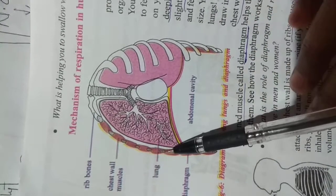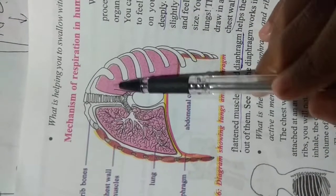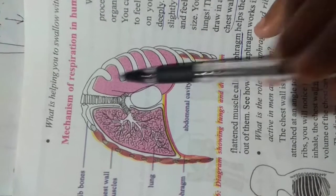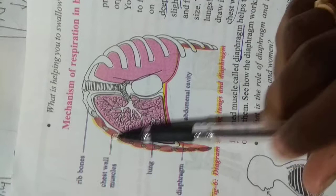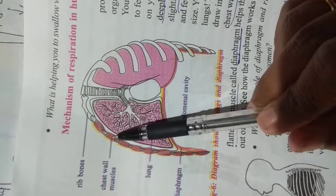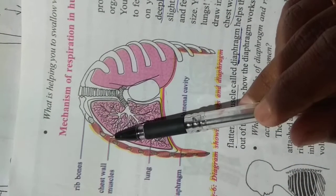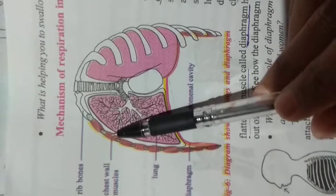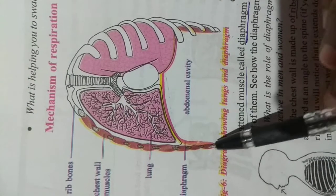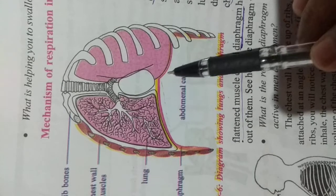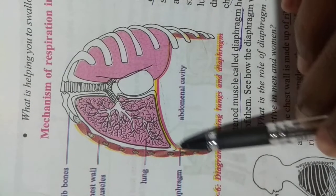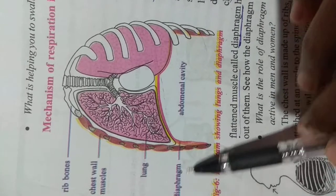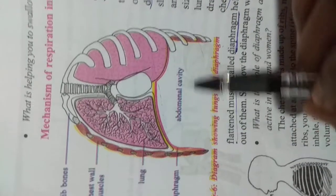So what is this? This is rib bones. This will be like this, rib bones. And this part is called rib cage because it will be like a cage. And this red color between bones, this is chest muscles. This is lungs and this is diaphragm. Diaphragm is an elastic muscle below the lungs. And this is abdominal cavity.